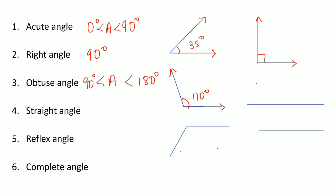The next type is the straight angle. The measure of a straight angle is exactly 180 degrees. So if this is the angle, this is my center here, and this would be 180 degrees.